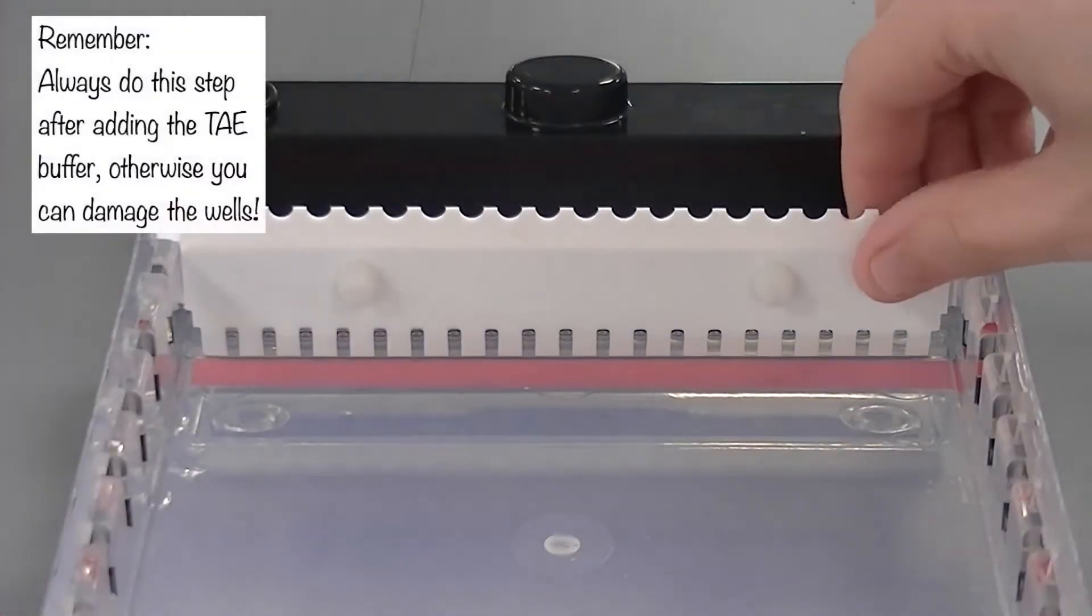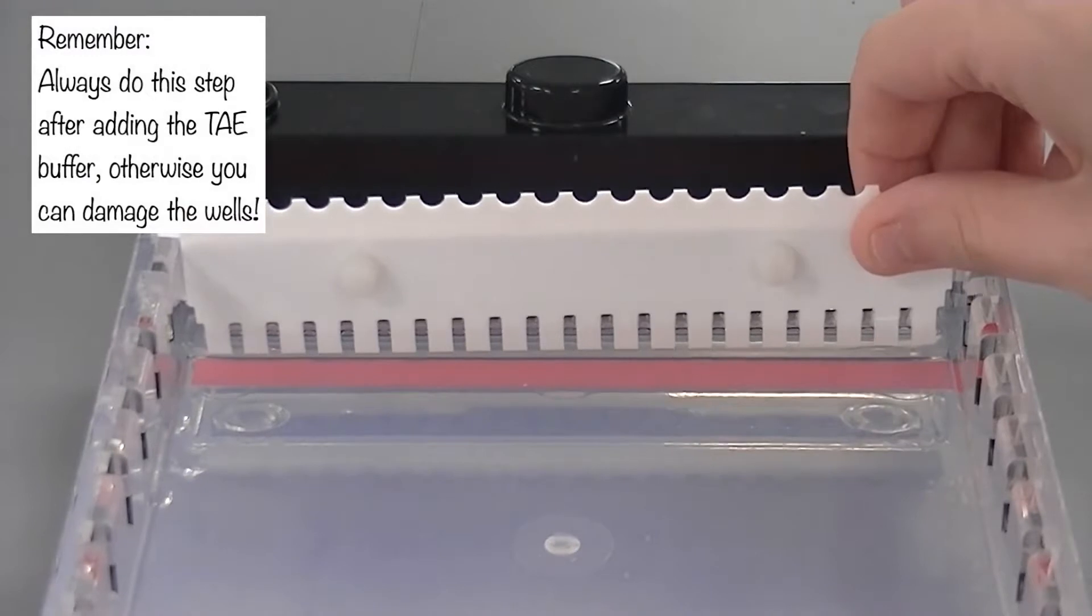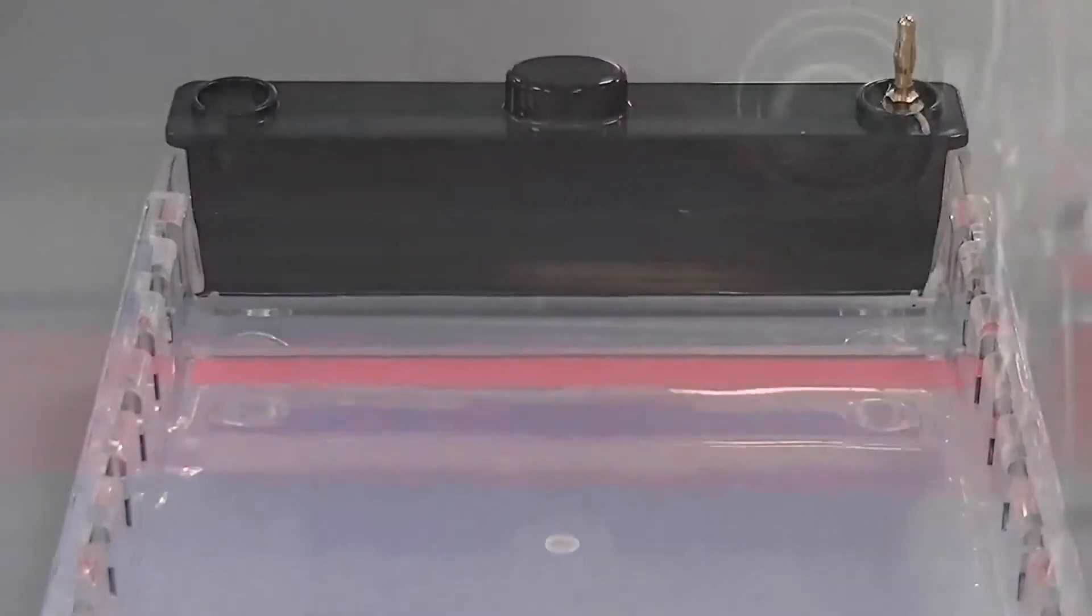Gently pull the comb from the gel, lifting straight up so as not to damage the wells. The size of the wells depends on the comb used. These are 25ml wells.